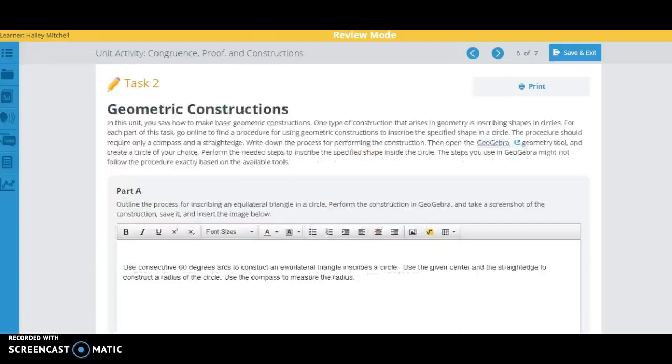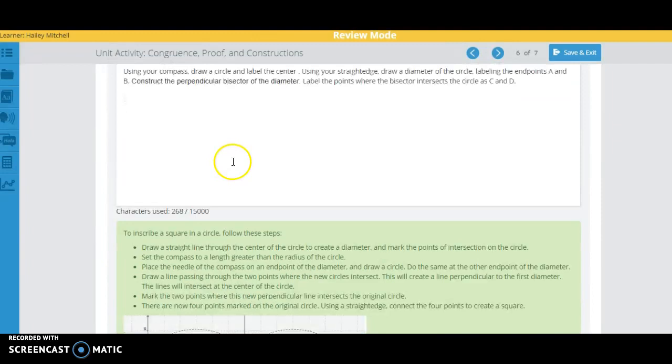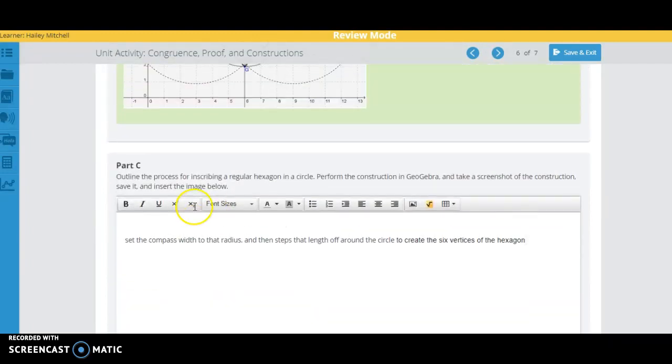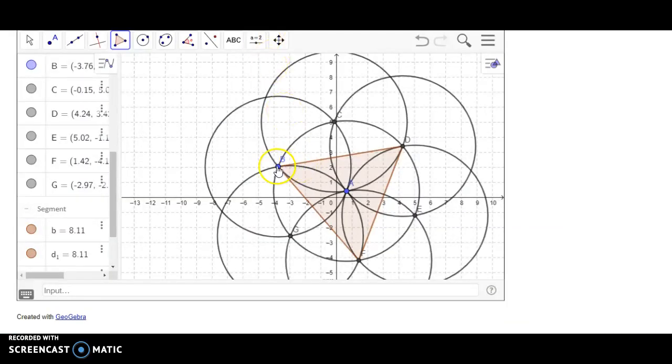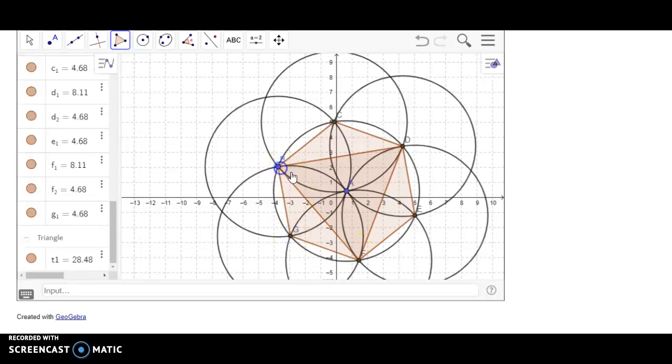Now to make, so that was the first construction. To make the last one, all we're going to do is take this same construction, but now connect every single one. And there we go. So that's how we do that one.